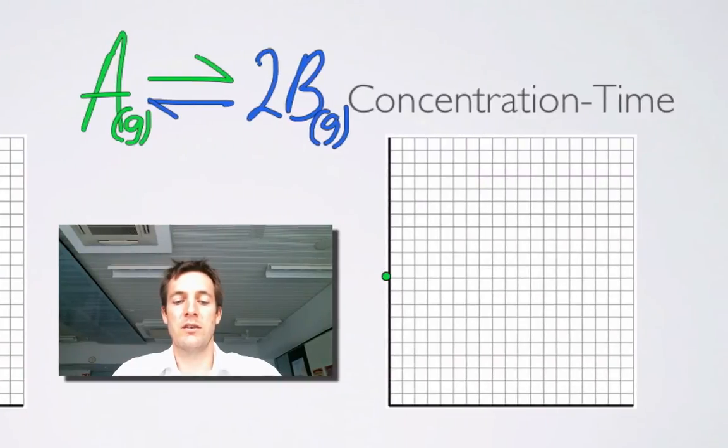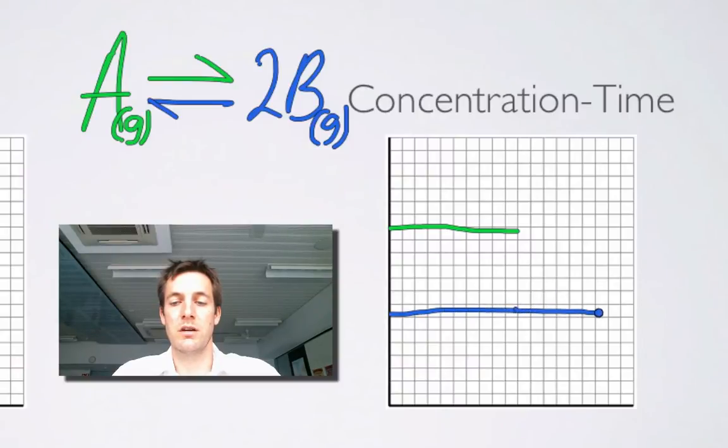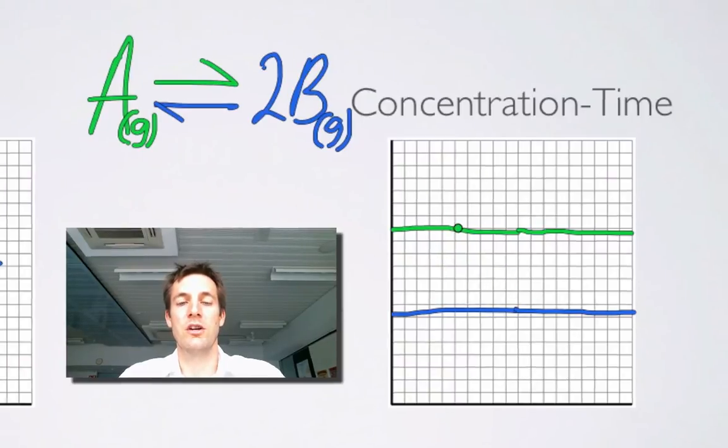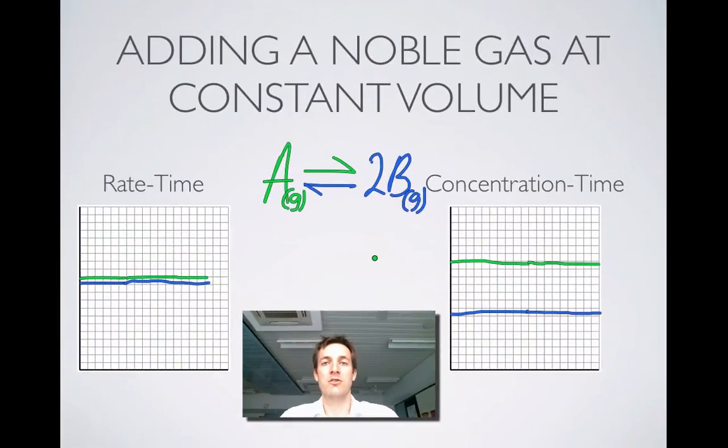And it shouldn't be any great surprise to us if the rates of the forward and backward reactions haven't changed, then surely that means that the concentrations of the reactants and products won't change either. And although my wobbly lines suggest that they're not quite remaining constant, what I'm trying to show here is that the concentrations won't change either.